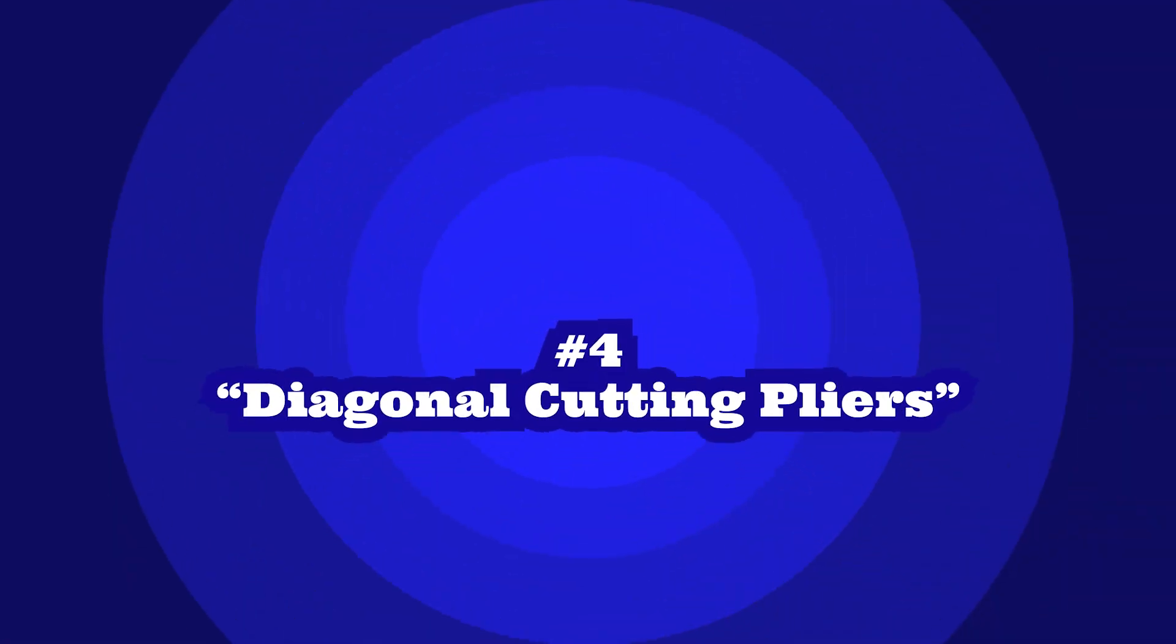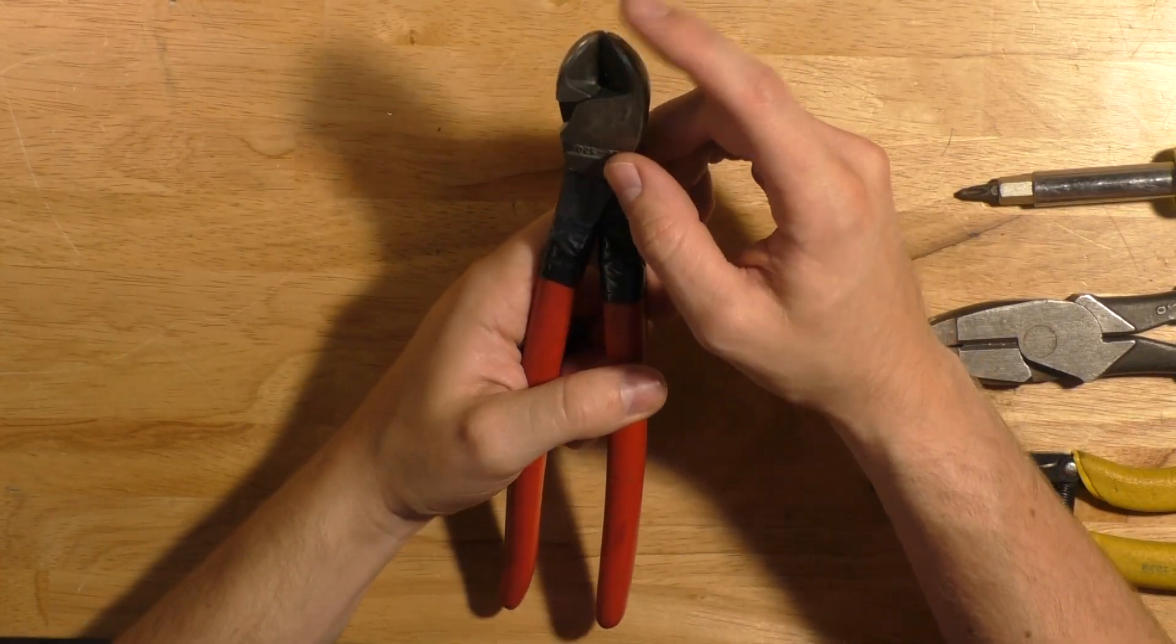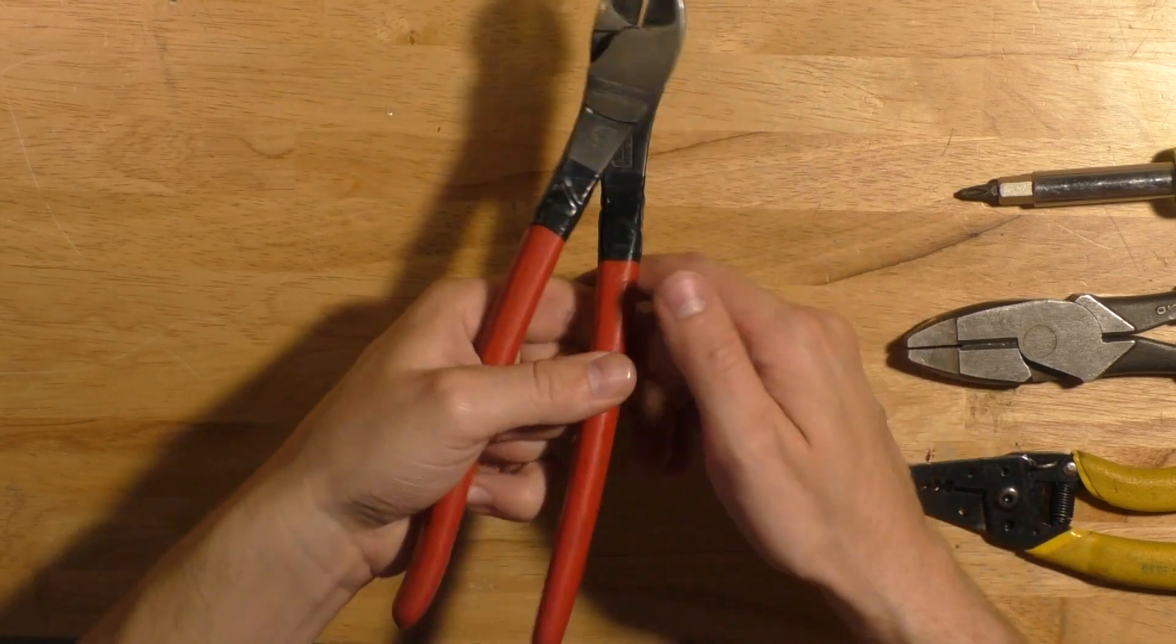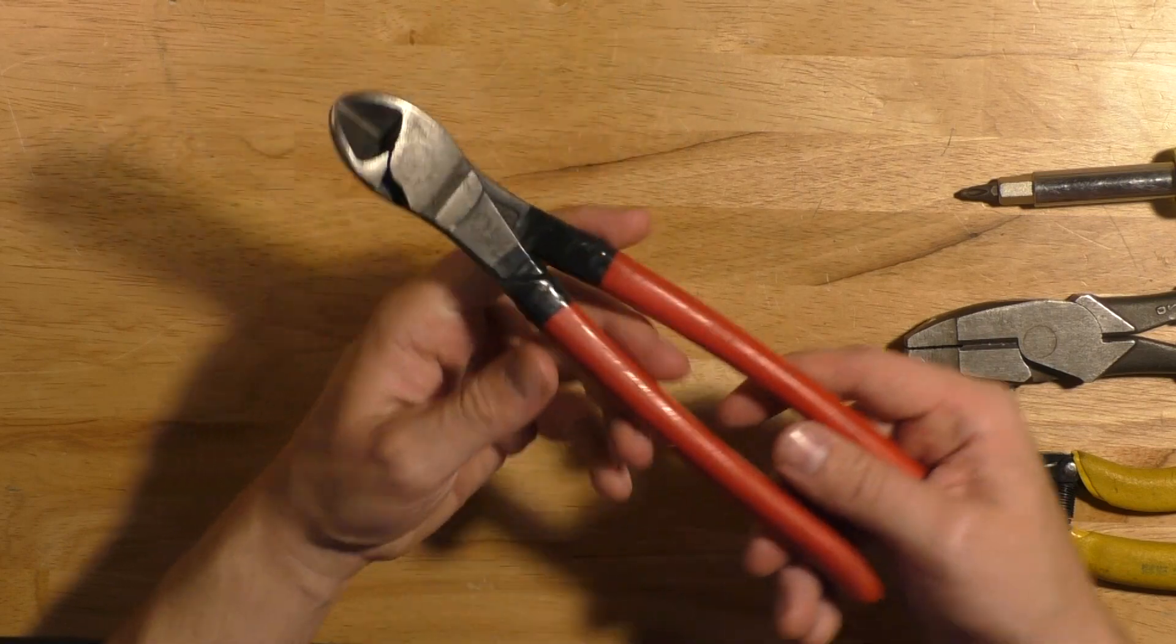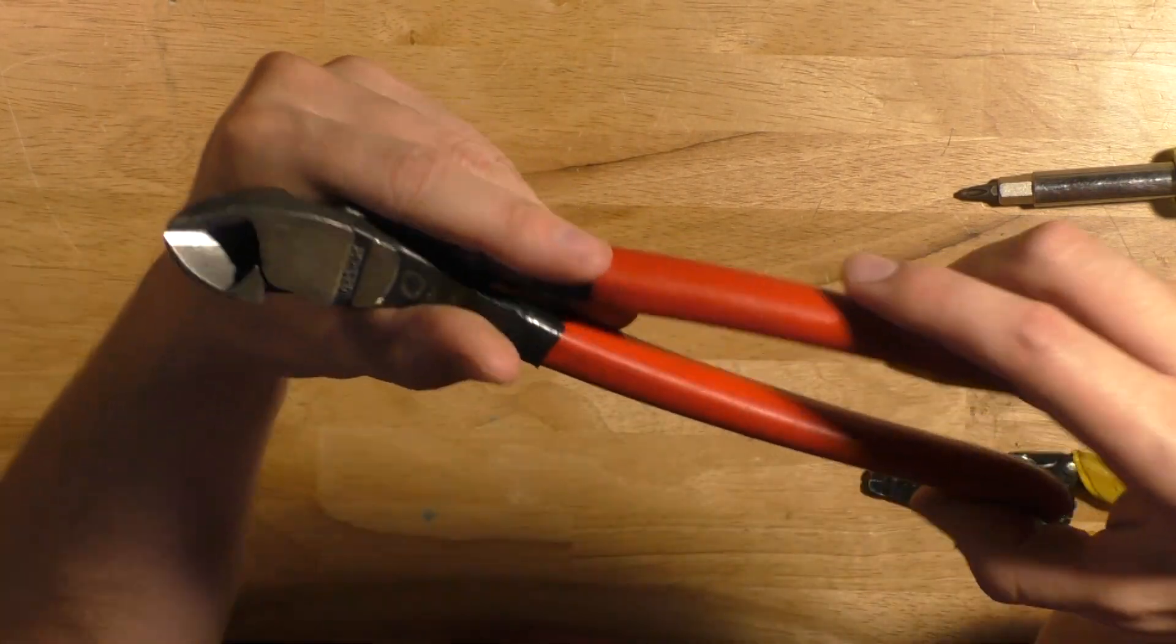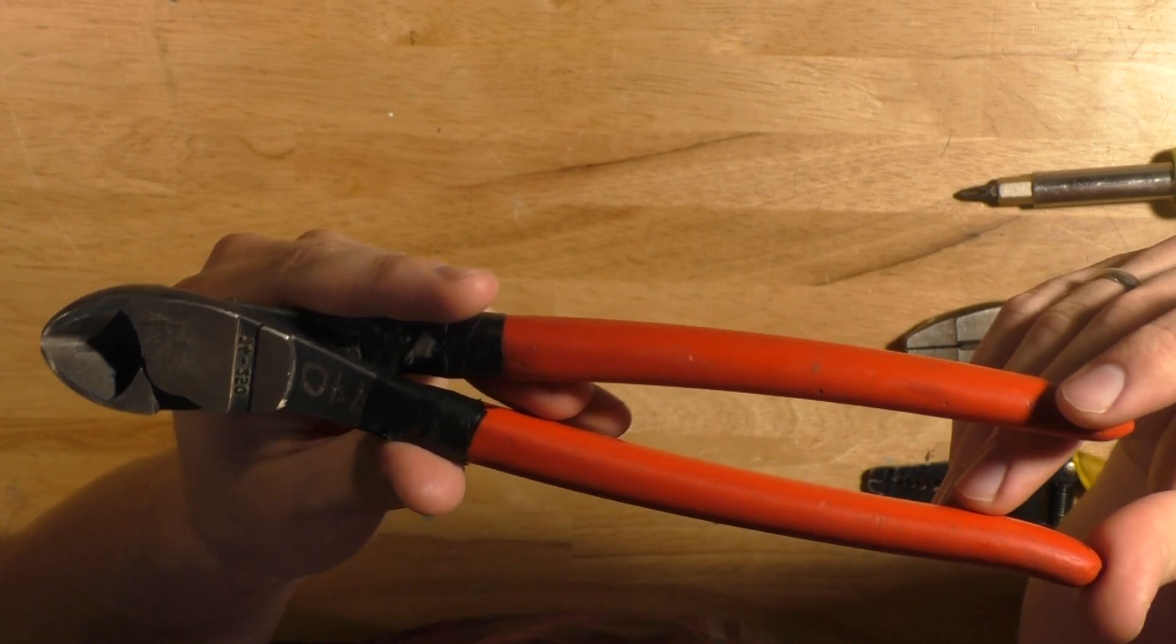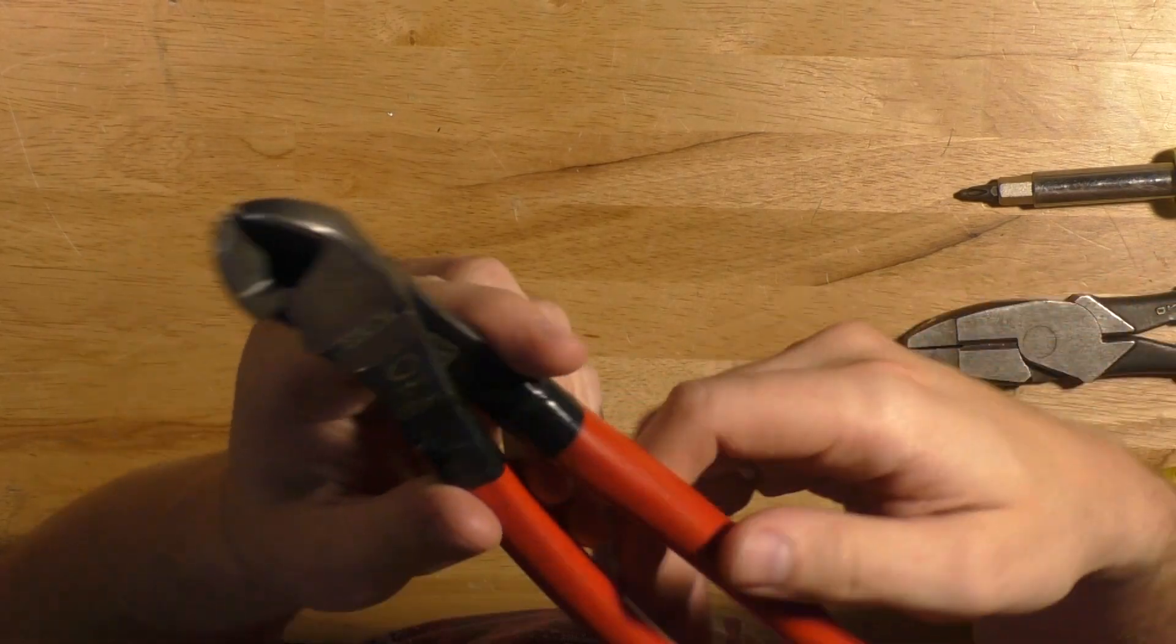Number four on the list is the diagonal cutting pliers. This is used for cutting and prying mostly. The nose on this pliers is going to be more pointed so that way you can get finer and closer cuts compared to what you would get from a regular blade on a pliers. A common thing I use this pliers for is to remove staples on Romex cable after they've already been nailed down.